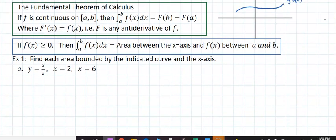So here, the fundamental theorem of calculus states if f(x) is continuous on an integral from a to b, then the integral from a to b is F(b) minus F(a), where capital F(x) is the antiderivative of little f(x).